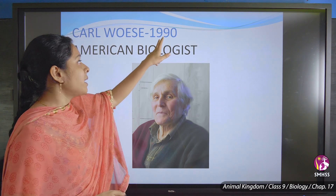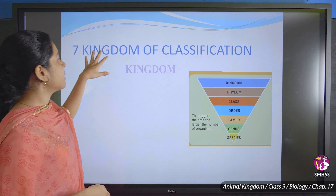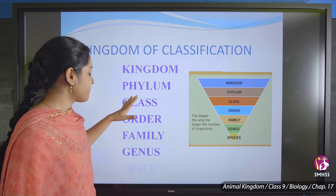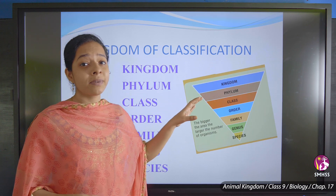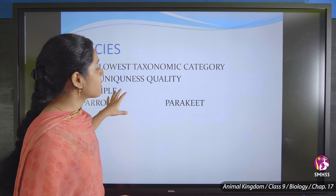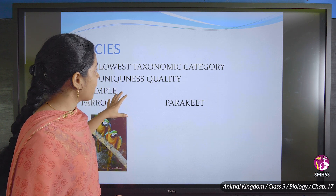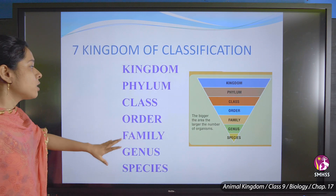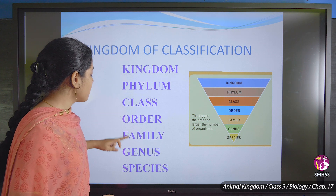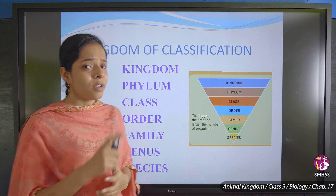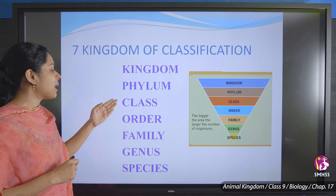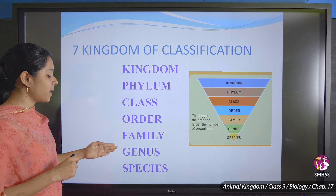Carl Woese in 1977 was an American biologist who classified kingdoms into seven types, which is accepted widely. The seven categories of classification are: Kingdom, Phylum, Class, Order, Family, Genus, and Species.